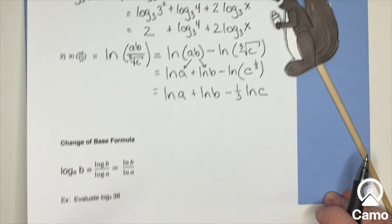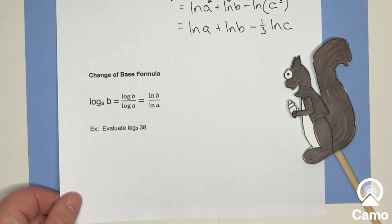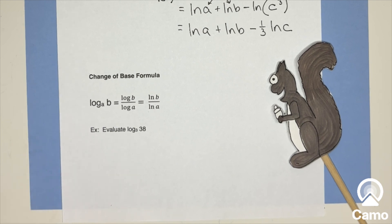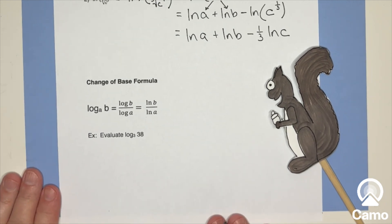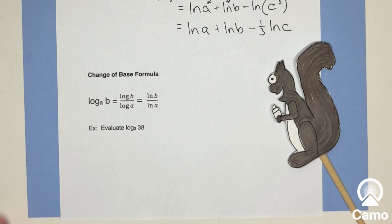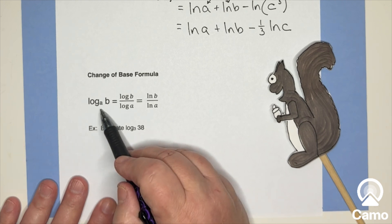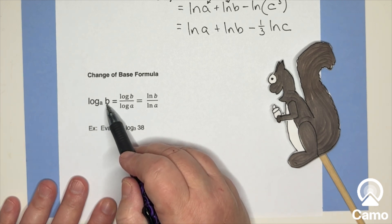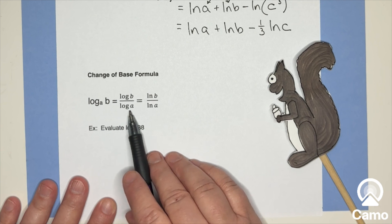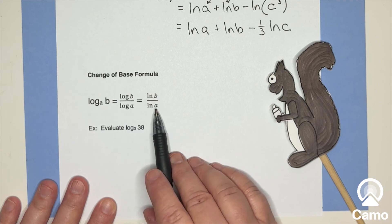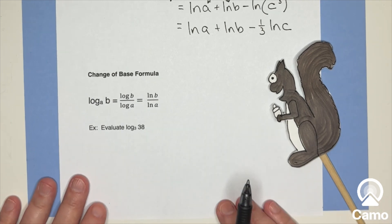One other thing I want to go over in this section is there's one other, it's not really a law of logarithms. It's called the change of base formula. And it's pretty amazing. It says that if you have log base a of b, that that's just common log of b over common log of a or natural log of b over natural log of a. Now, why is this helpful?